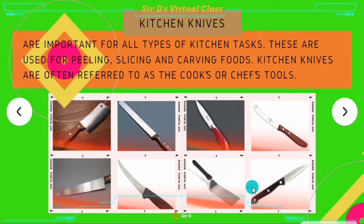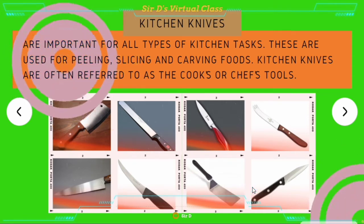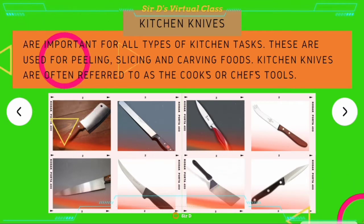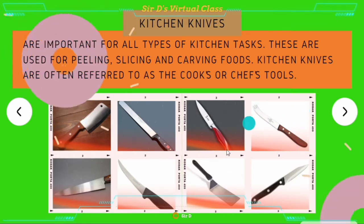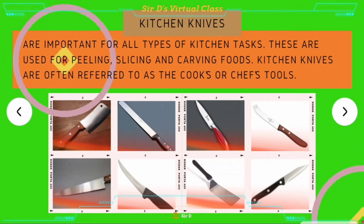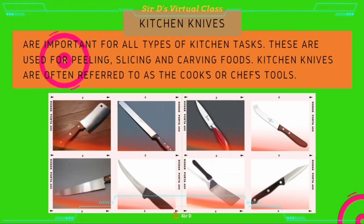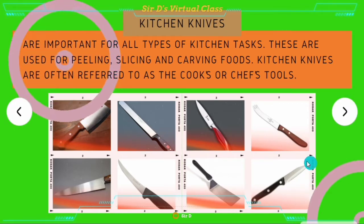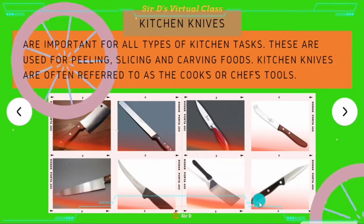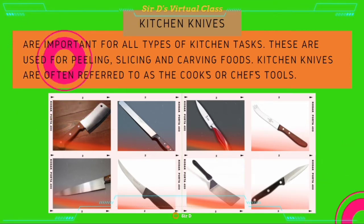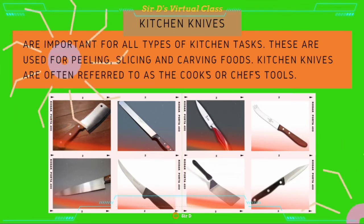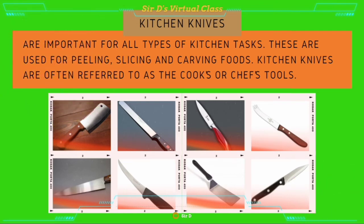Spatula is used for leveling off ingredients when measuring, as well as to spread frosting and sandwich fillings. Citrus knife is specifically designed for sectioning of citrus fruits. Its blade is two-sided and serrated. Paring knife is a type of knife which is short and concave with hollow ground. It is used for peeling and sectioning fruits and vegetables.